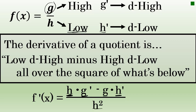Again, the derivative of a quotient — when you refer to the numerator as the high part and the denominator as the low part — is low d high minus high d low, all over the square of what's below. When you say this rhyme correctly, the last word in the first line and the last word in the second line will rhyme.